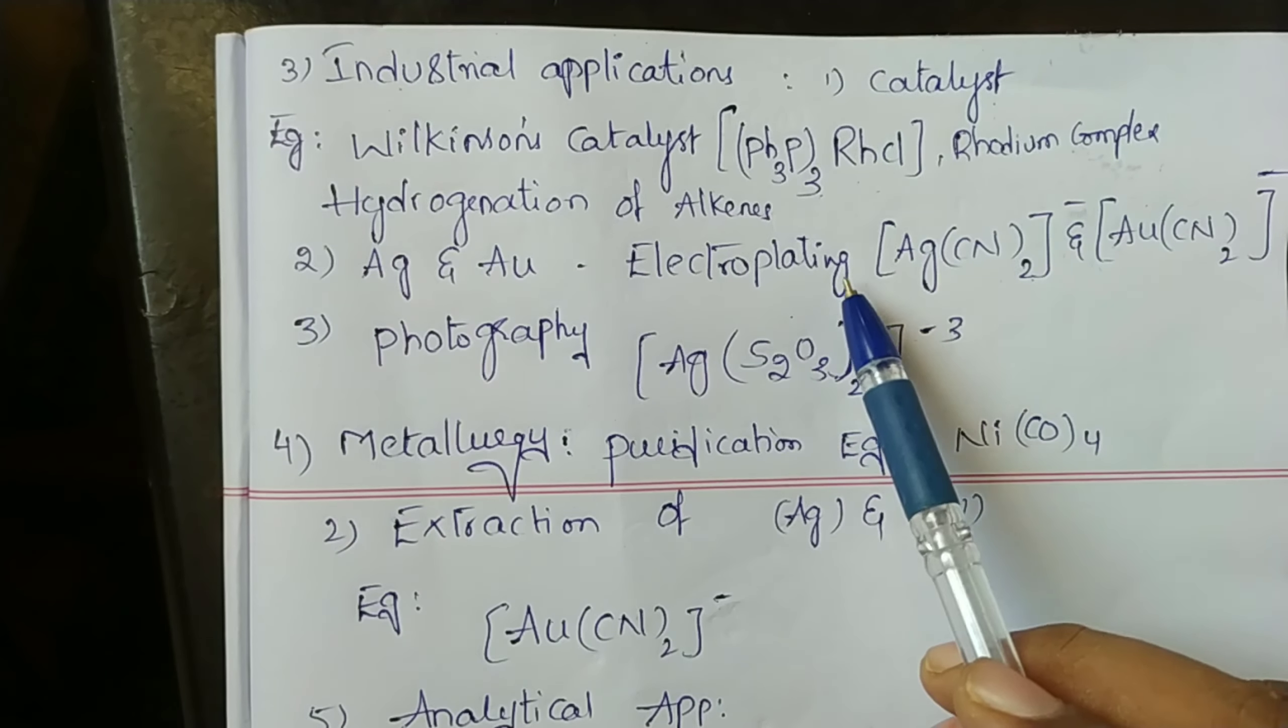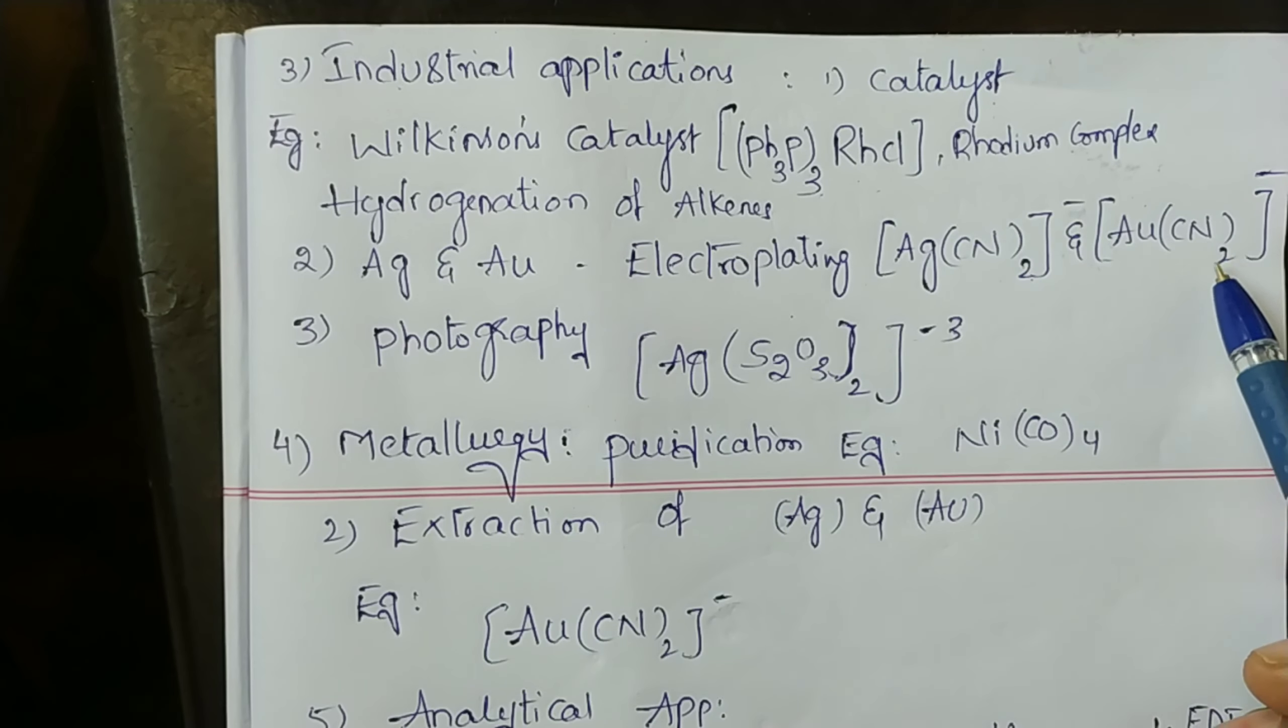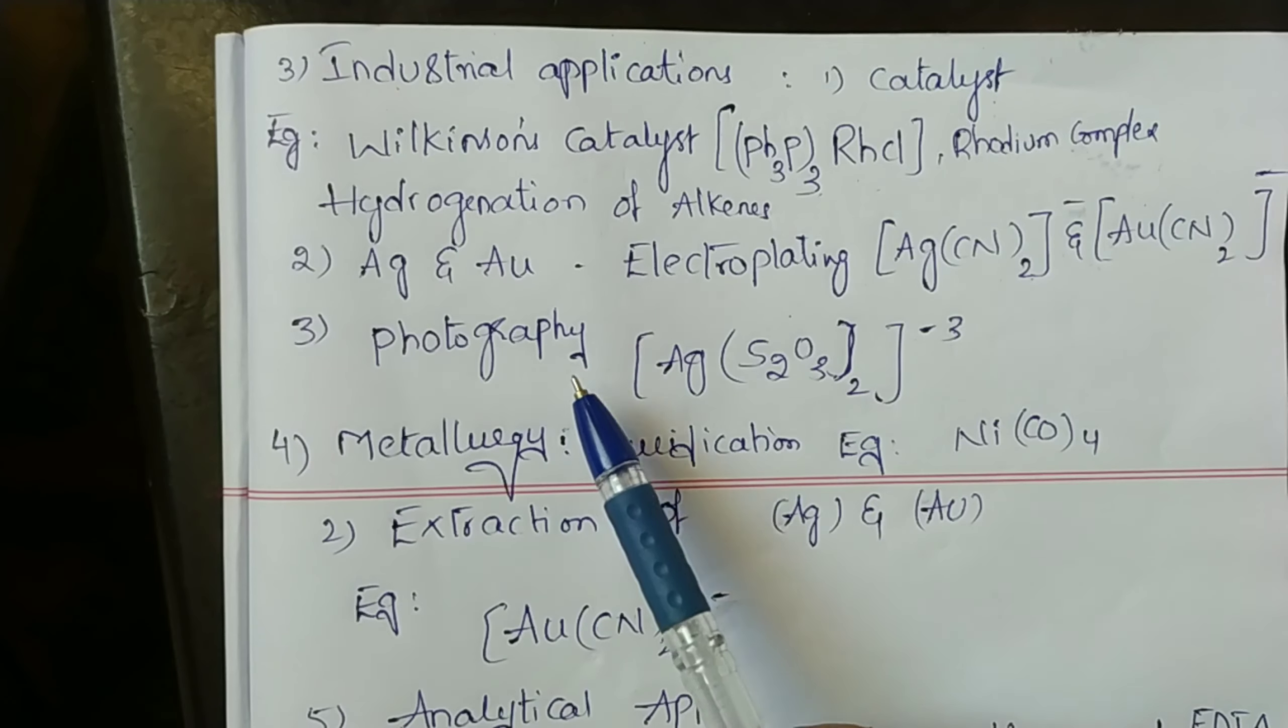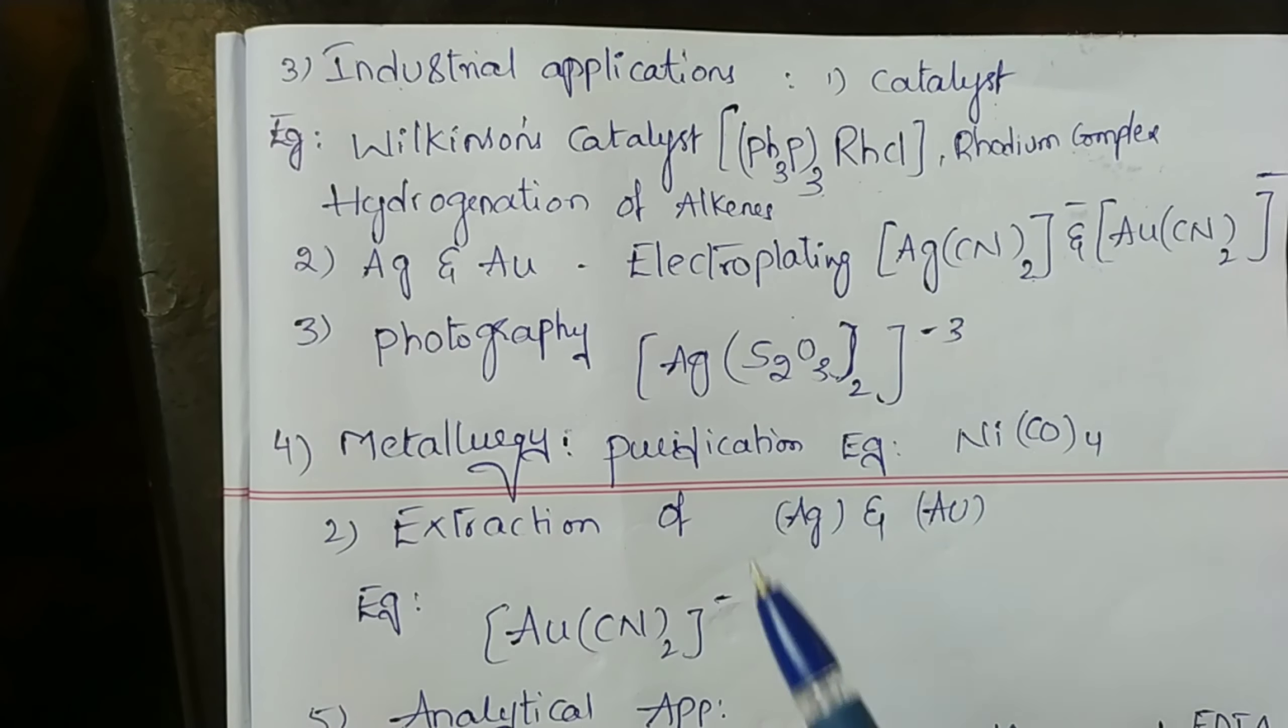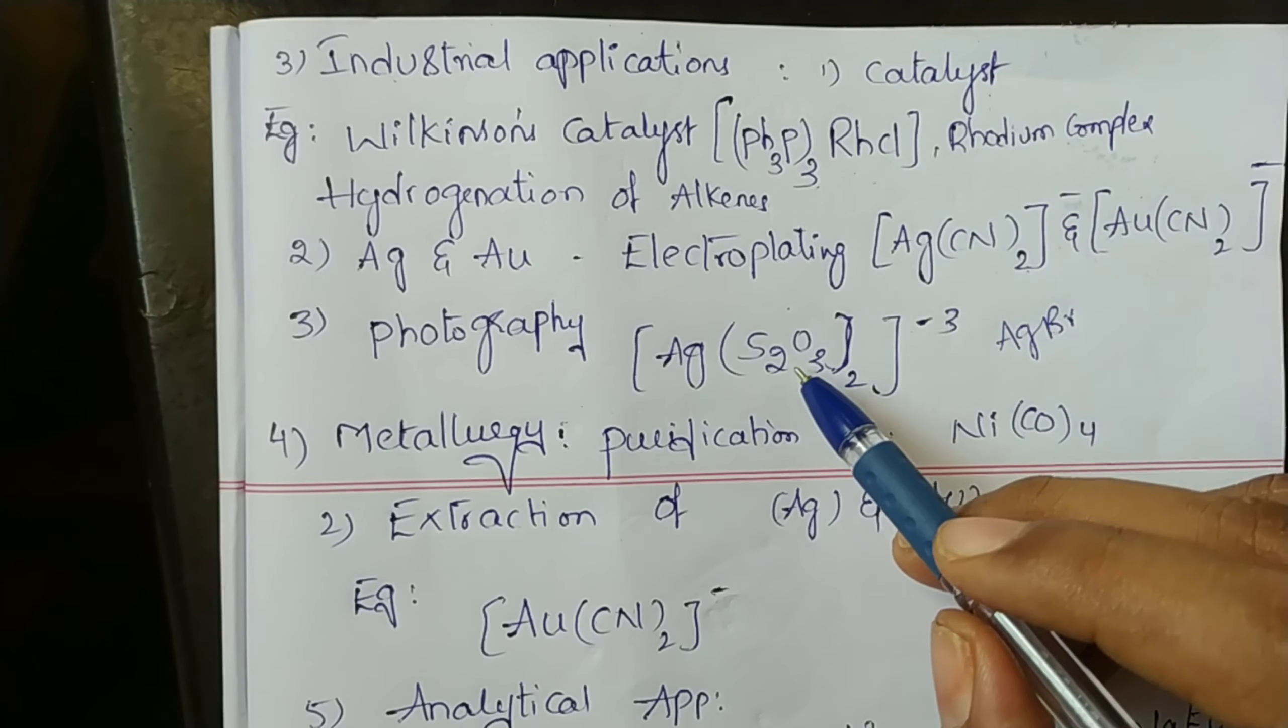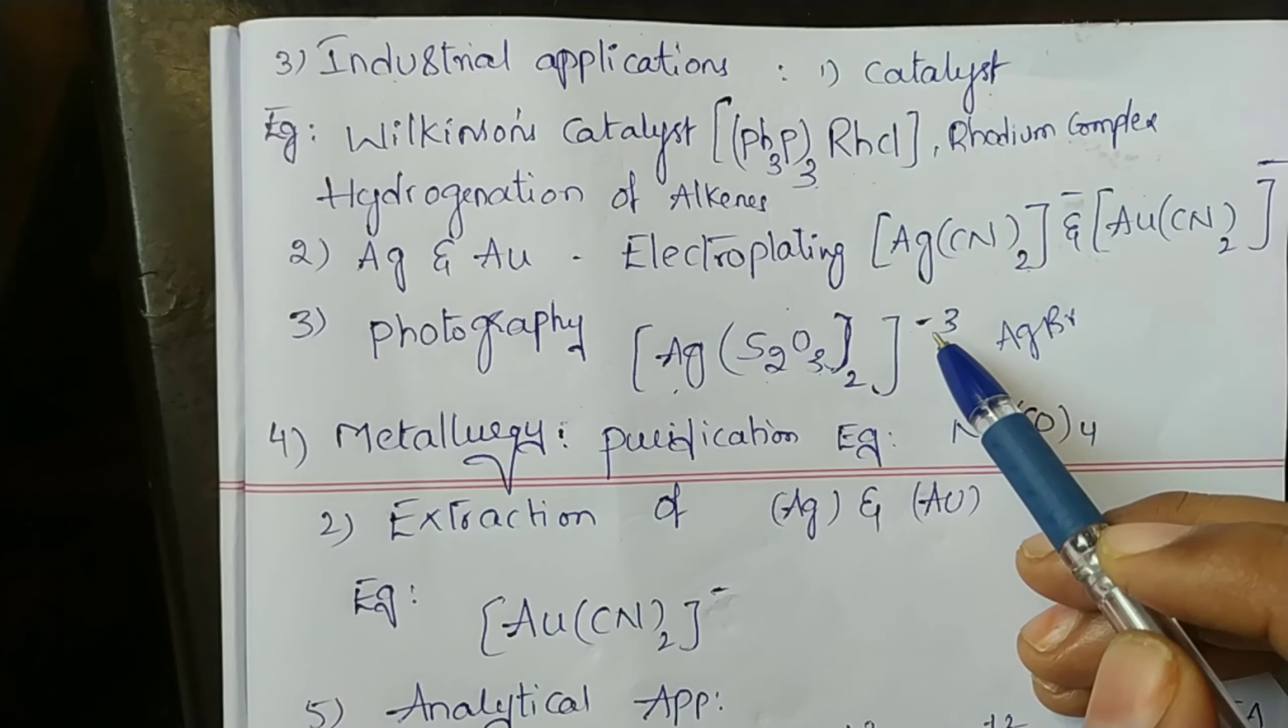Examples: [Ag(CN)2]- and [Au(CN)2]-. In photography, the developed film is fixed by washing with hypo solution, which dissolves and decomposes AgBr by the formation of complex [Ag(S2O3)2]3-.